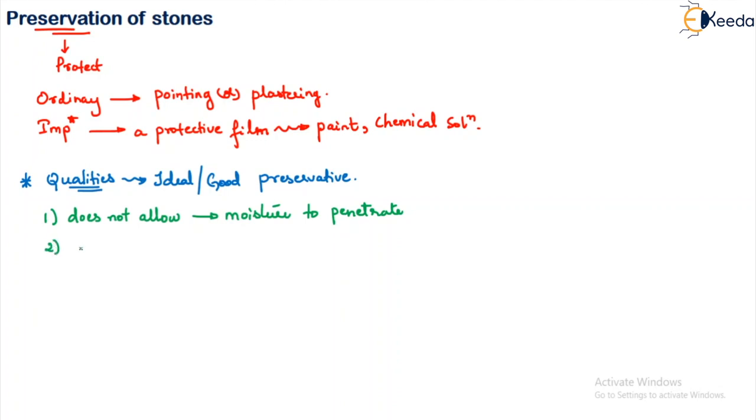The second one is it should not change the color of the stone, natural color of the stone, whatever will be there. Now, when you apply the preservative, it should not try to change the color of the stone. Or what we can say, it should not develop any objectional color.